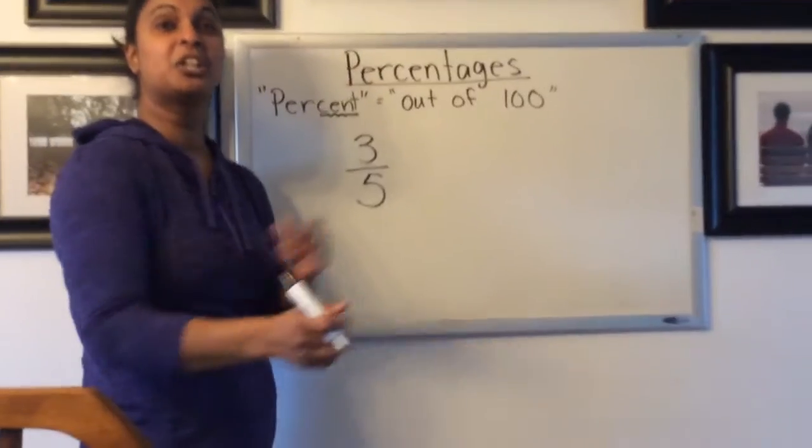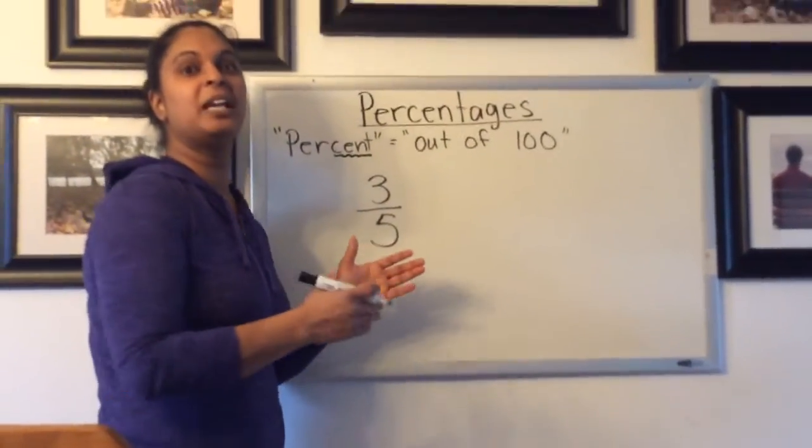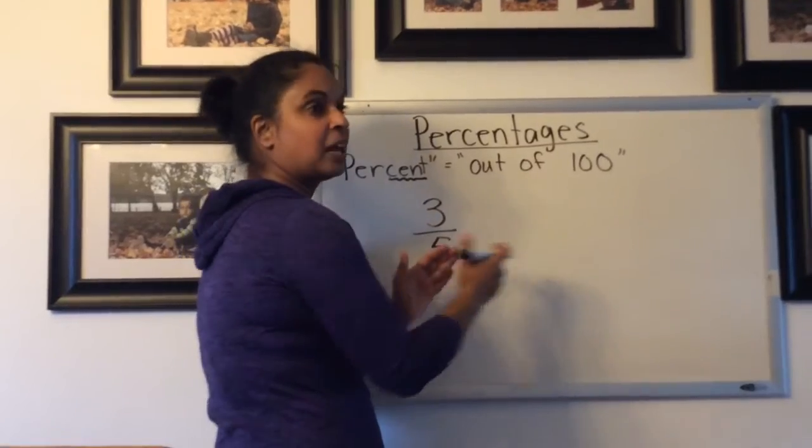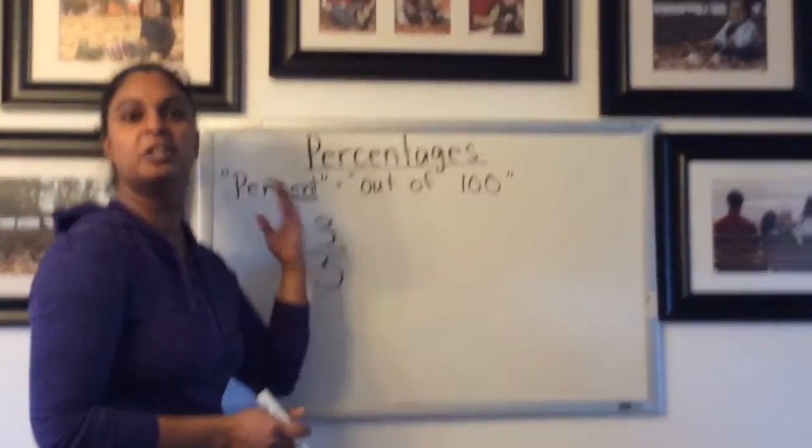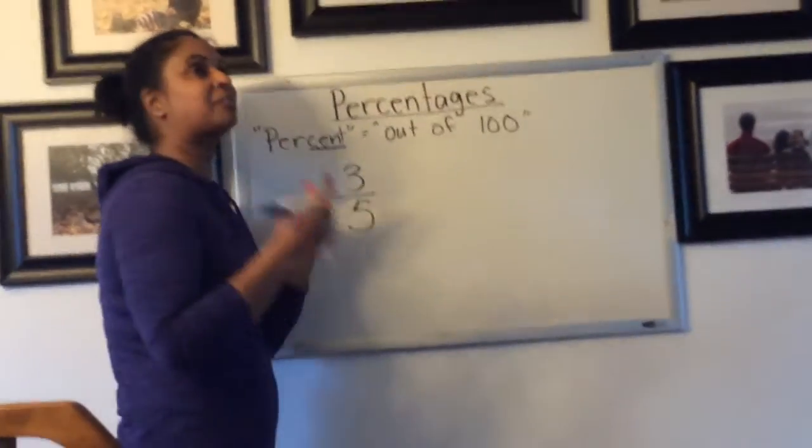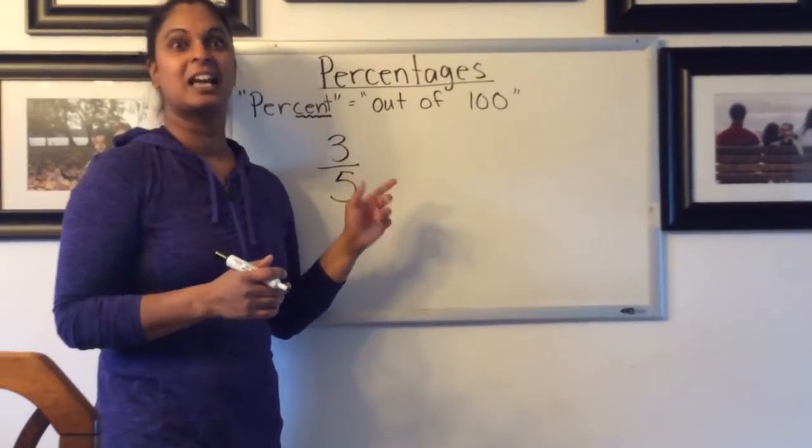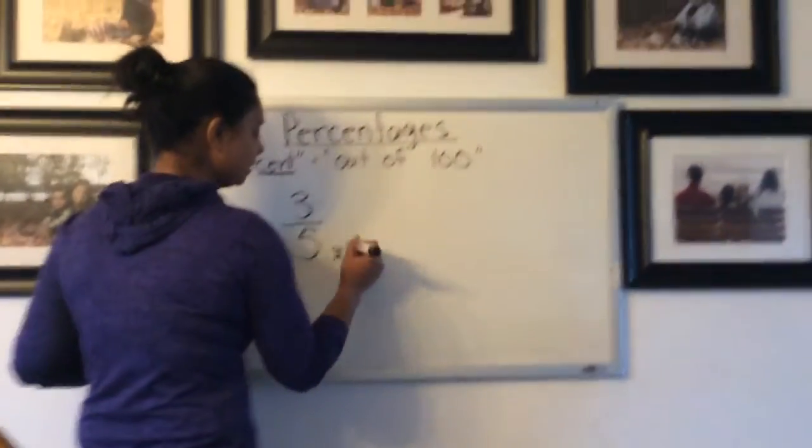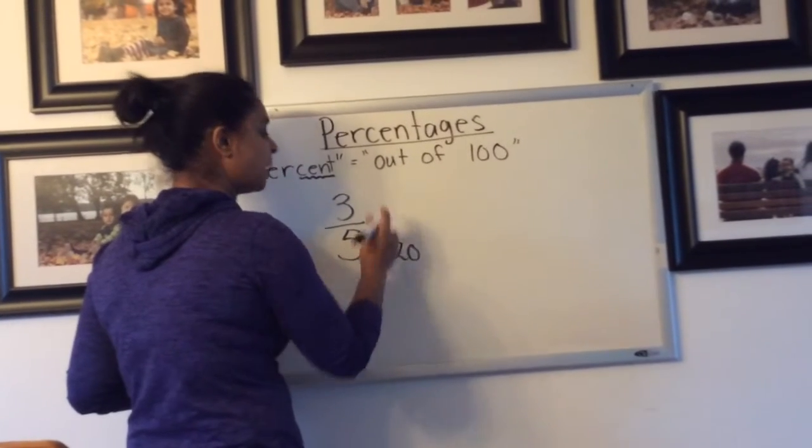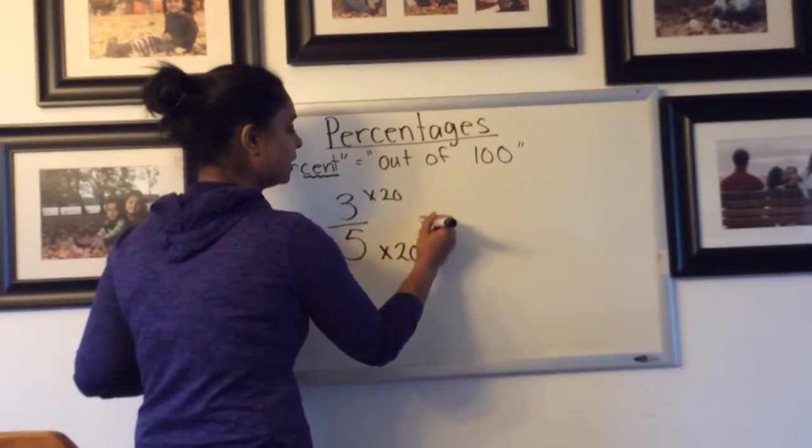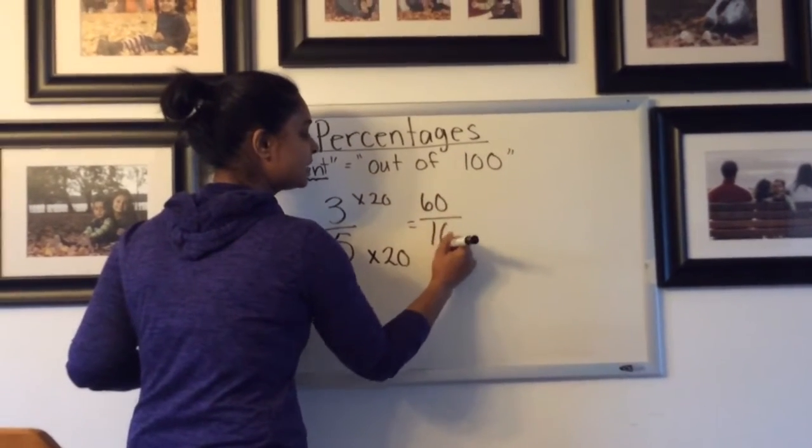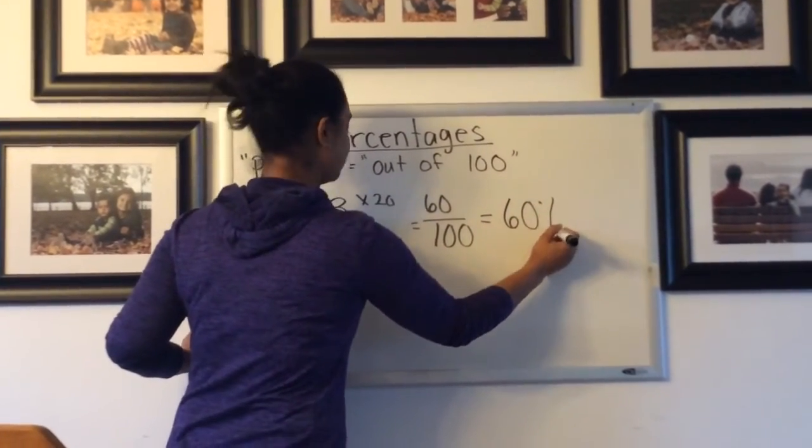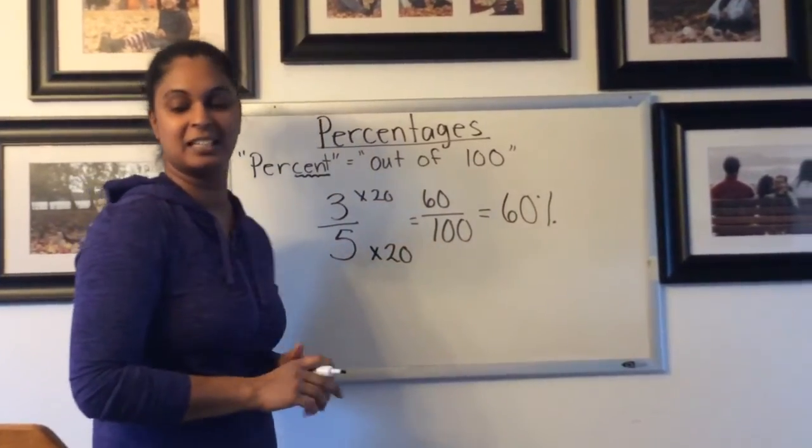So what we need to do is turn that denominator into 100. Just like we were working with fractions before and changing denominators, how do we get the denominator to change into another number? We have to multiply, and whenever you multiply the bottom, you must also multiply the top. So we have to think, what do I multiply 5 by to get 100? Hopefully you've figured out that's 20. 5 times 20 is 100. So if I multiply the denominator by 20, I must multiply the numerator by 20, which gives me 60 out of 100. Now I'm able to know that's 60%. 3 out of 5 is 60%.